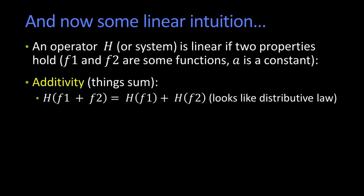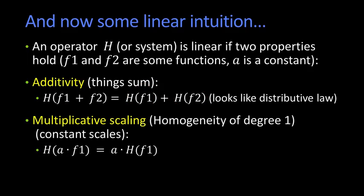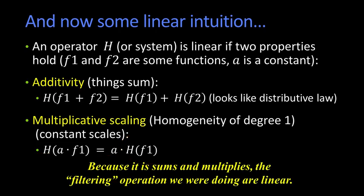So an operator, we'll call it h or a system, is called linear if two properties hold. And for what I'm going to show now, both f1 and f2 are going to be functions and a is going to be a constant. So the first property is called additivity, which is basically just that things sum. So if I have some operator and I apply that to the sum of the two functions, f1 plus f2, I just get the sum of the operator applied to each of the functions. The other one, which is sometimes called scaling property, is just that if you multiply your function by a constant a, and then apply h, what you get is a times h applied to f1. We do some multiplication, then we sum them. And because multiplication and addition both have these properties, basically the filtering operations we're going to do are going to be linear.